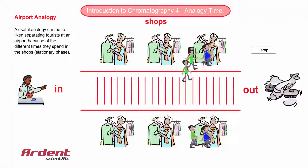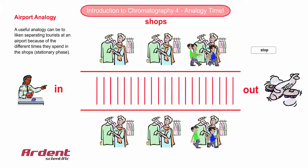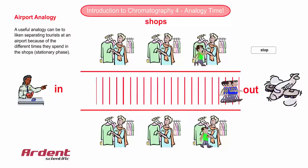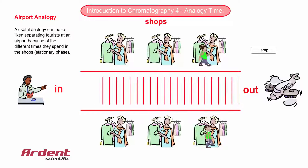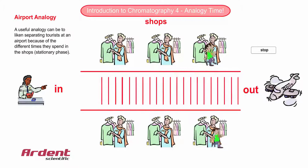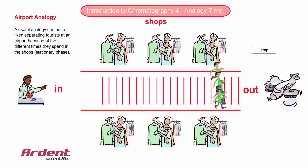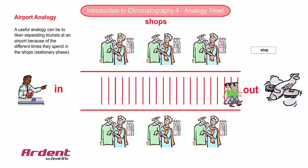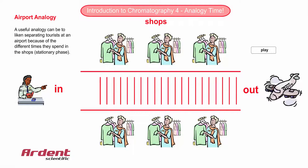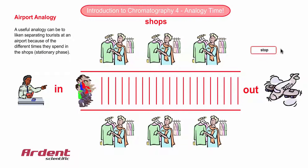The thing is that each of the tourists like clothes shopping to different degrees. The red tourists aren't all that fussed with the shops but spend a little time browsing. The green tourists, on the other hand, love the shops and spend heaps of time in there. The blue tourists, well they're somewhere in between the red and the green.